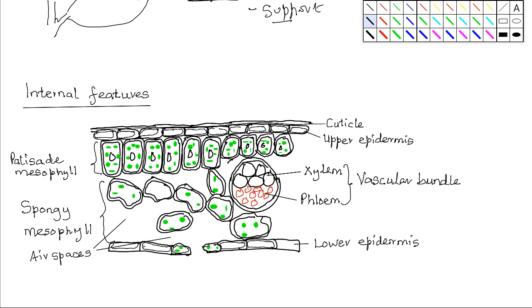Internally, the leaf has the following adaptive features for photosynthesis. The cuticle — most terrestrial plants have a cuticle on the upper and sometimes also the lower surface. The cuticle is transparent, non-cellular, waxy, and waterproof. Its transparency allows for the penetration of light to the photosynthetic tissues beneath. Being waxy and waterproof also reduces excessive loss of water by evaporation, and being non-cellular it protects the underlying tissues from mechanical damage and infection.